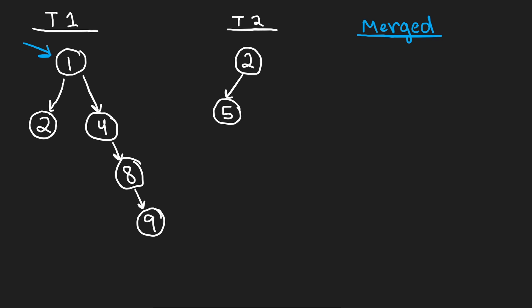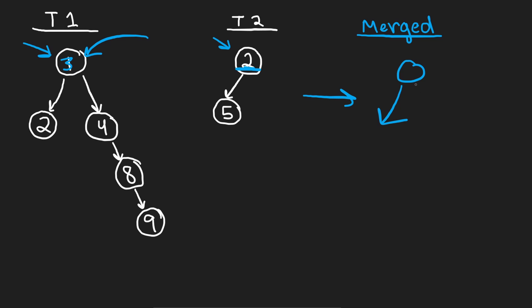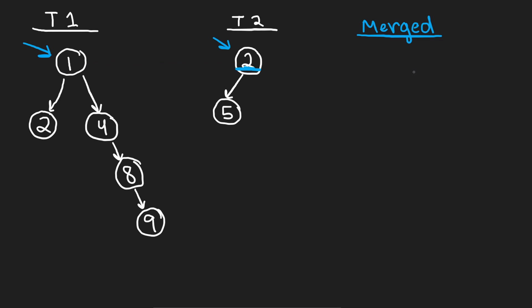Meaning we're going to start at the root of each node. We're going to merge these two nodes that we're at because they're both non-null. We're going to merge these two nodes — one plus two — and we're going to create a new tree. We're not going to merge them in place. We're actually going to create a brand new tree, so we're going to have to create brand new nodes and then put the values that we want in these nodes. We're going to merge these two nodes — one plus two, that's going to be three — create a new node. Now we want to fill in the left subtree and the right subtree of this new tree.